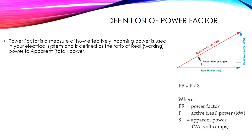There are two types of power: one called the real power and another called the reactive power. The summation of these two powers gives us something called the apparent power. Apparent power is the vector summation of real power and reactive power. Real power is measured in kilowatts, reactive power in kilovars, and apparent power in kilovolt-amperes.